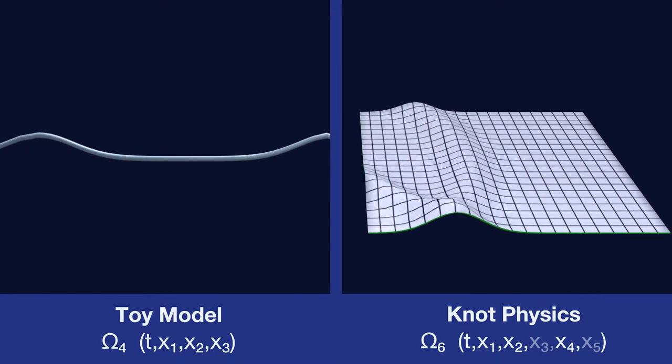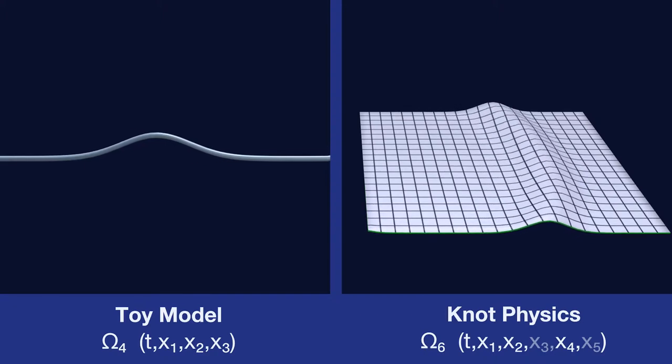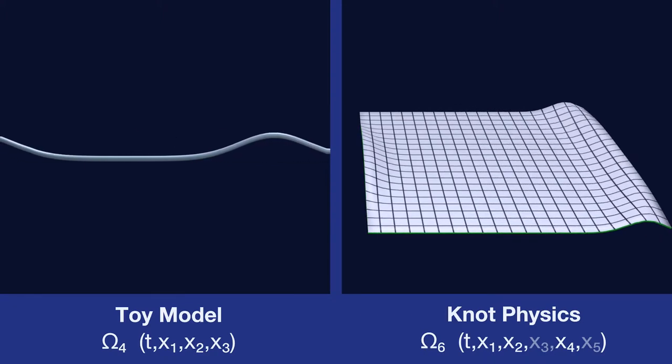So in this example, we're just showing the behavior of waves on both the toy model on the left and in knot physics on the right.